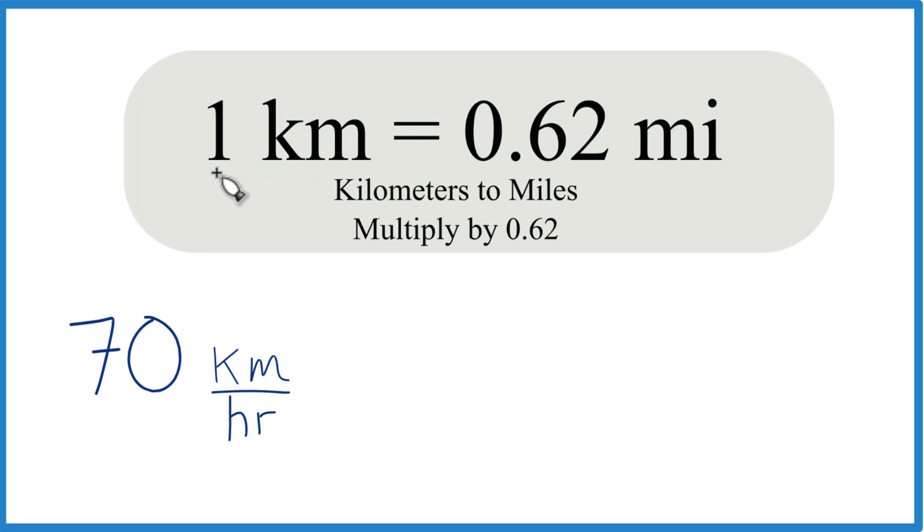So what we need to know is that one kilometer is 0.62 miles. If you need more decimal places, you could have 0.621371, and some people just use 0.6.